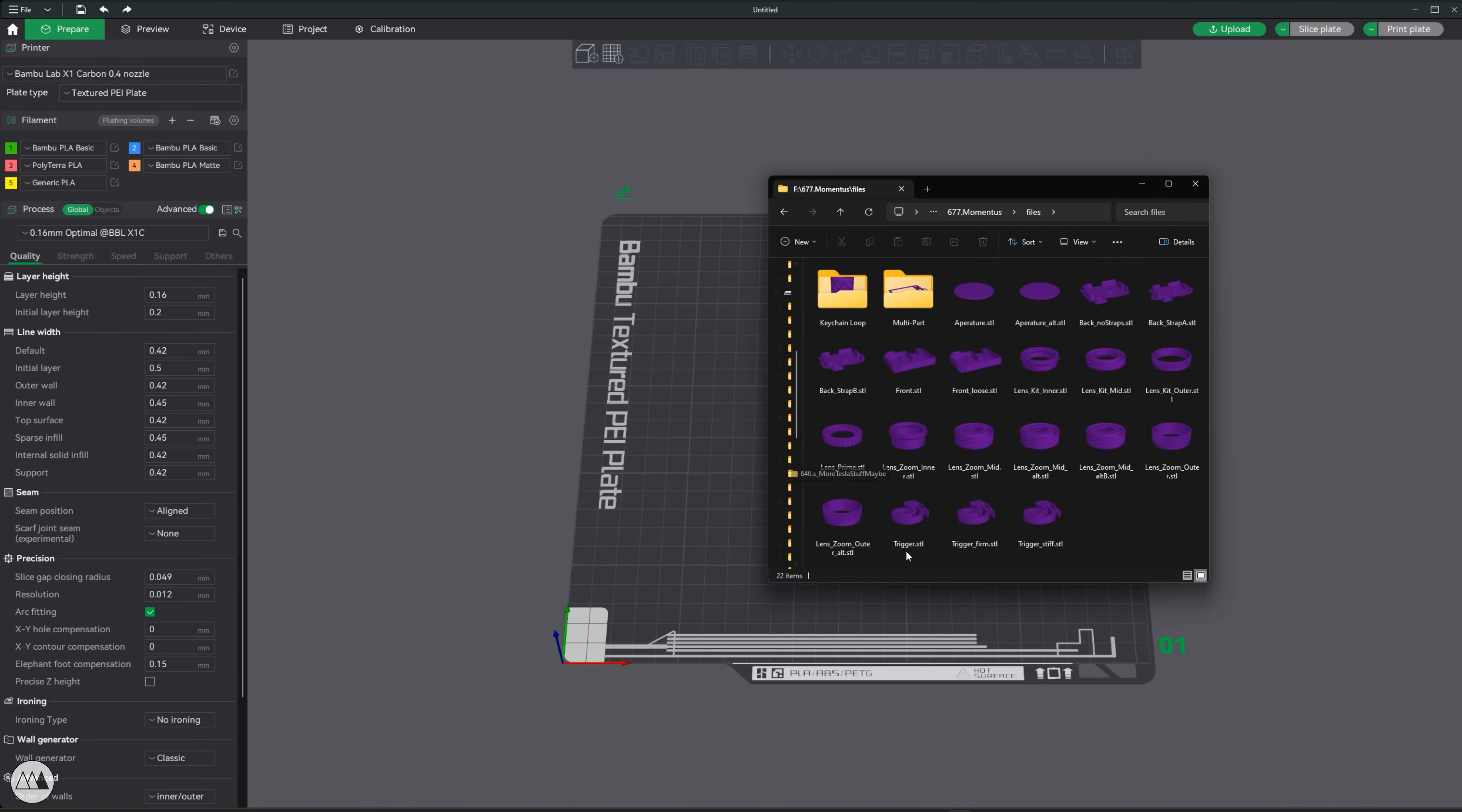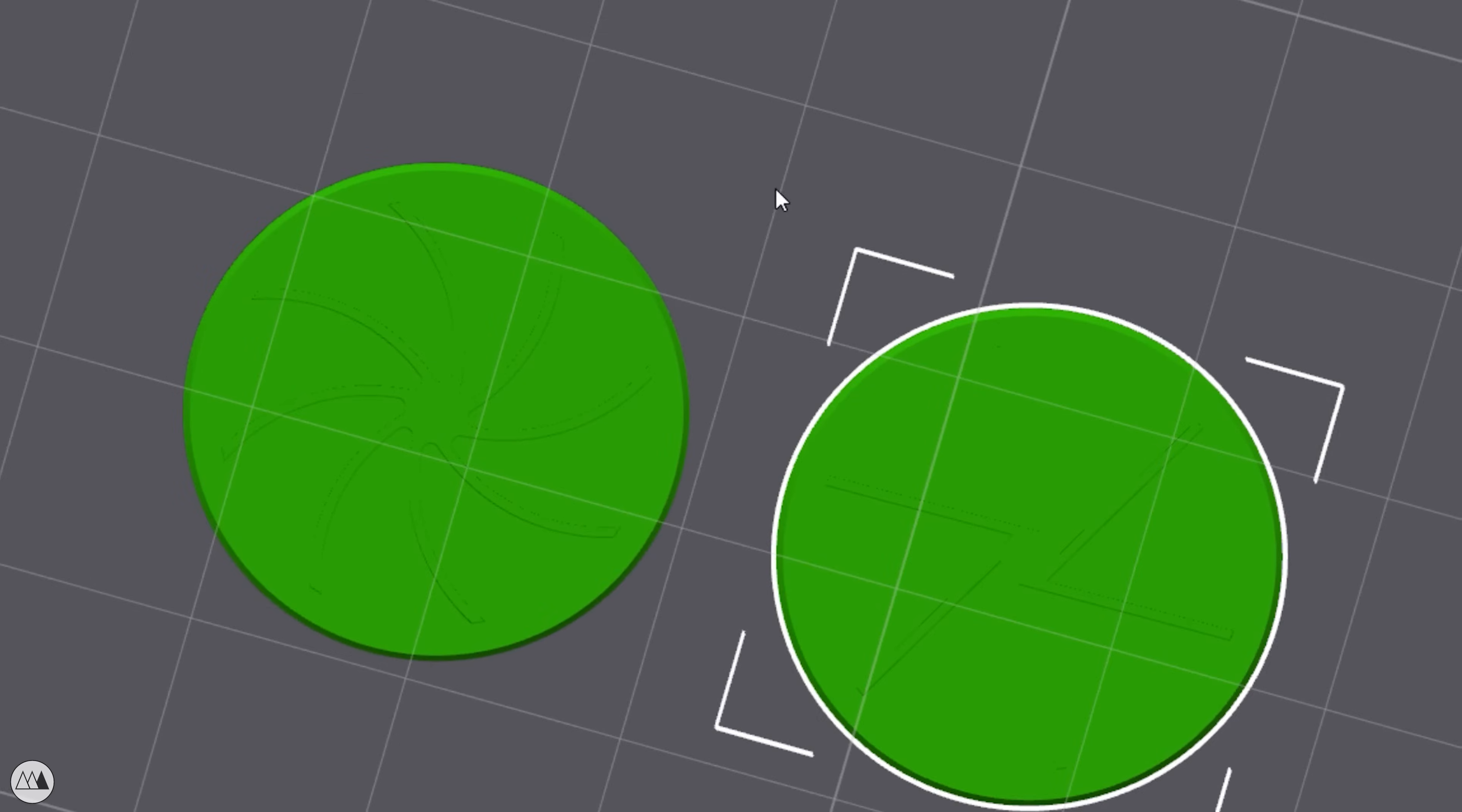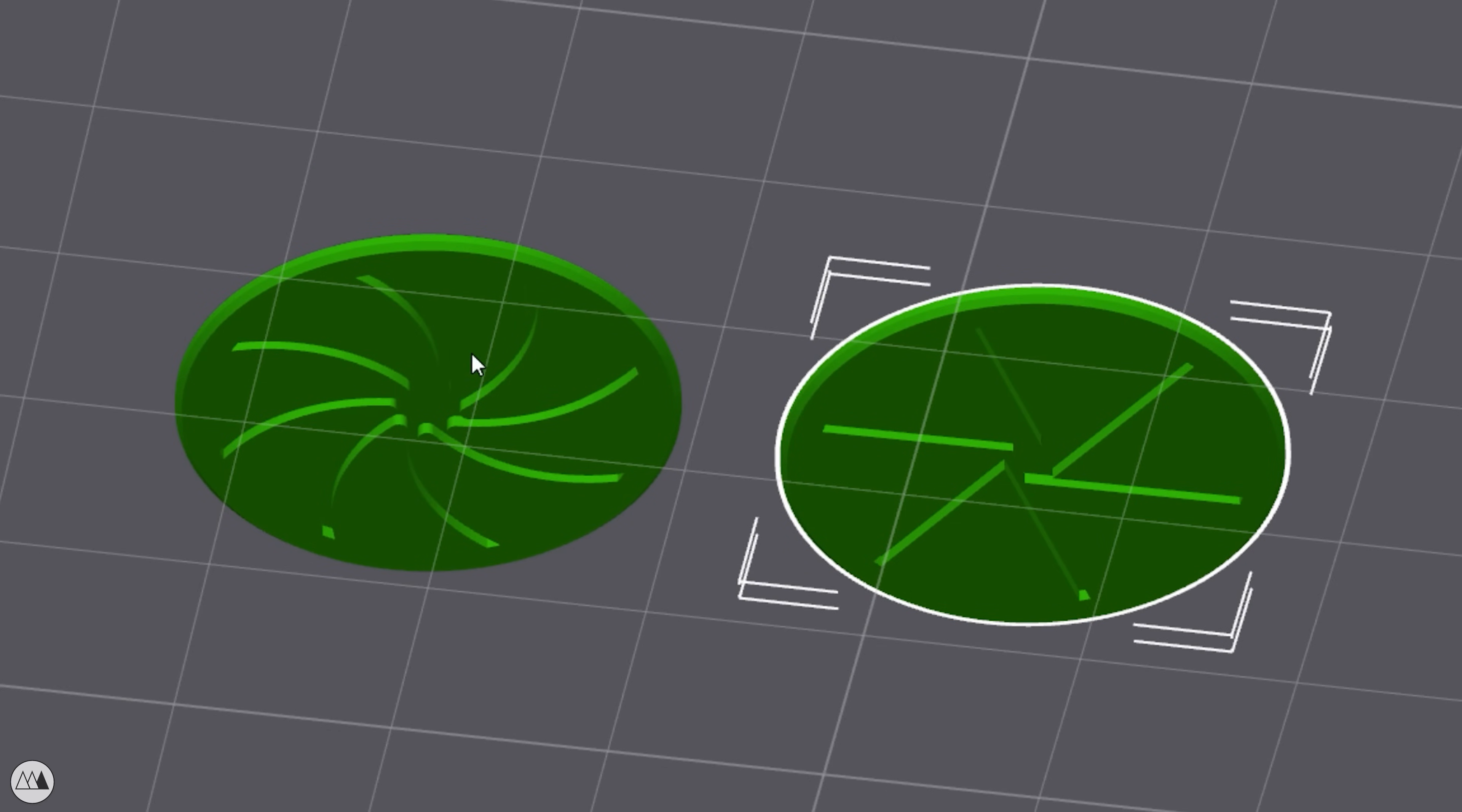First off, let's take a quick look at the STL files. There are several variations, so you may have a different number of files. For example, here we have two versions of the aperture, and they're purely ornamental, so you can choose your preferred look.